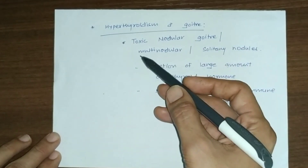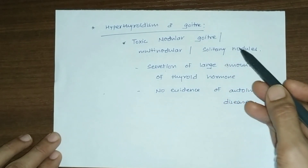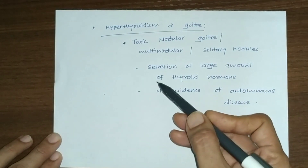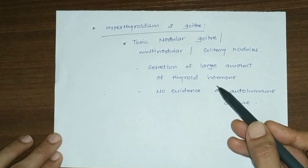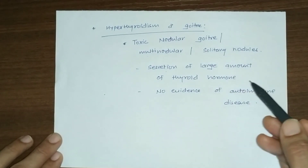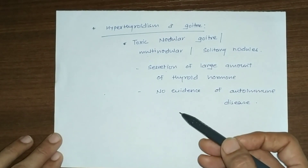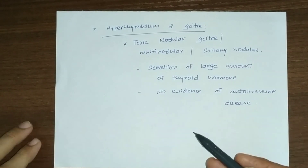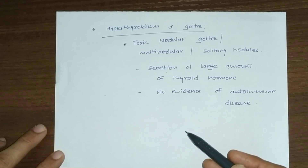Hyperthyroidism with goiter — toxic nodular goiter: here multiple or single nodules are present in the thyroid gland, and large amounts of thyroid hormone are secreted from these nodules, with no evidence of autoimmune disease. This concludes the discussion of disorders of the thyroid gland.